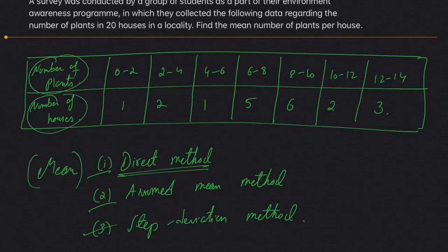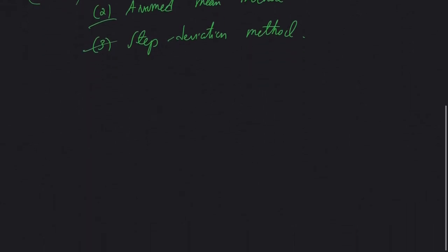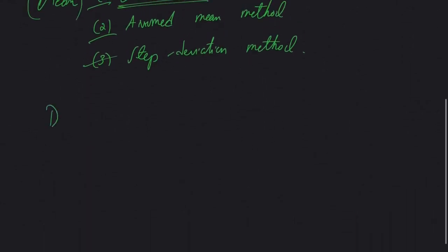Why? Because here the number of plants and the number of houses are small - like 0-2, 2-4, 4-6, 6-8, 8-10. It's not like hundreds. The values are simple, small values. That is why we will use the direct method here.